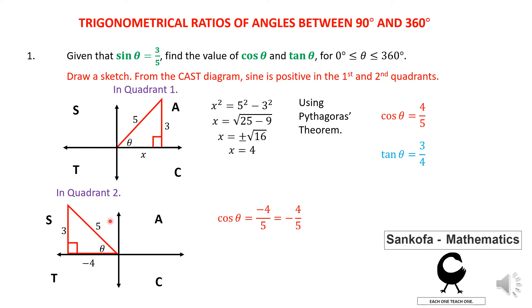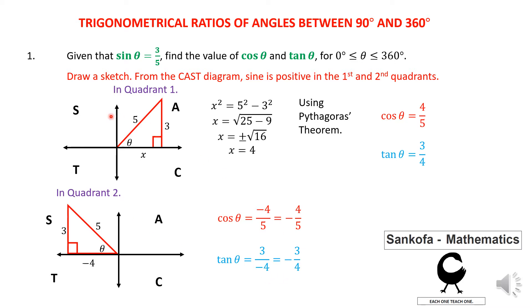In the second quadrant cosine is negative, because cosine is only positive in the first and fourth quadrants. Then we find tan theta — tangent is positive in the first and third quadrants, so I'm expecting a negative value. Tangent is opposite over adjacent: 3 over negative 4, which simplifies to negative 3 quarters or negative 0.75. To do these questions, you need to draw a CAST diagram and determine in which quadrants the ratios are positive.